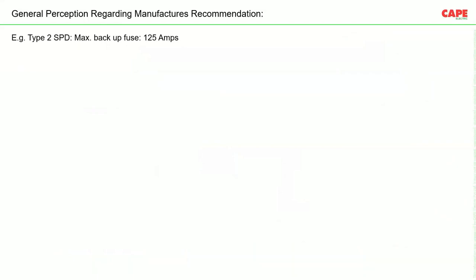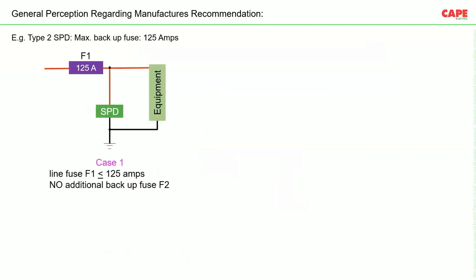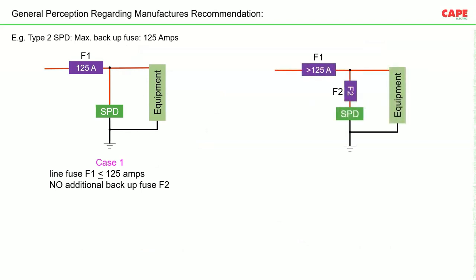Regarding general perception on backup fuse rating: every manufacturer specifies a maximum ampere rating for their SPD — for example, 125 A. If the main incomer fuse F1 is less than this specified value, no additional backup fuse is technically required. If F1 exceeds this value, an additional backup fuse F2 must be installed with a rating below the specified threshold.